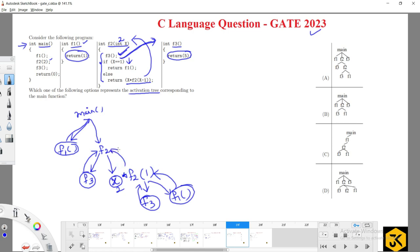As the entire thing completes, it will come back, and then f3 is going to start its execution. As nothing is there in f3, it is going to simply return the value 5.